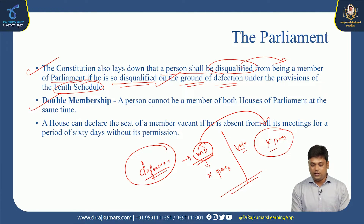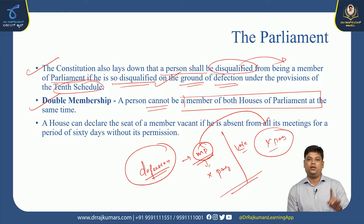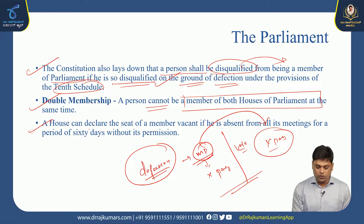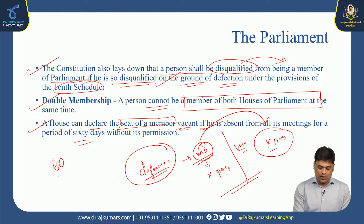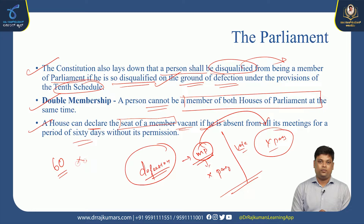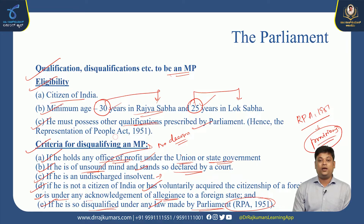A person cannot be a member of both houses of Parliament at the same time — only either Lok Sabha or Rajya Sabha. Regarding double membership, the house can declare a seat vacant if a member is absent from all its meetings for a period of 60 days without permission. These are all the criteria for disqualifying a member of Parliament.